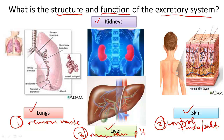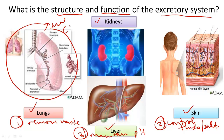Let's go through their contributions. Lungs excrete water vapor and carbon dioxide. They do this because a byproduct of the Krebs cycle during cellular respiration is water and carbon dioxide, so our body eliminates this.